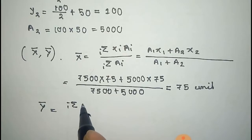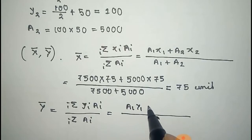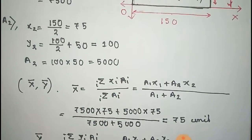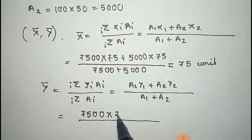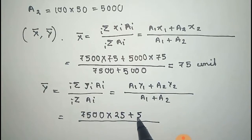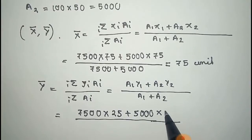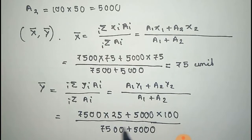For y-bar, it equals the sum of (Ai × yi) divided by the sum of Ai, which is (A1·y1 + A2·y2) / (A1 + A2). Substituting: (7500 × 25 + 5000 × 100) / (7500 + 5000). After calculation, y-bar equals 55 units.